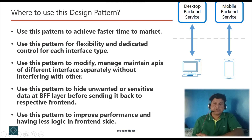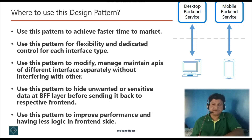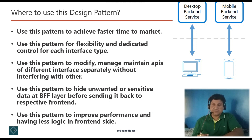Now let's understand the use cases of this design pattern and where to use it. Use this design pattern to achieve faster time to market, as the frontend team can have a dedicated backend team serving their unique requirements. Use this pattern to achieve flexibility and dedicated control for each interface type — the release of new features for one frontend type does not affect other interfaces. Use this pattern to modify and maintain APIs for different interfaces separately, to hide unwanted and sensitive data before sending it to frontend clients, and to improve performance by keeping less logic in the frontend side and bringing it into the BFF layer.